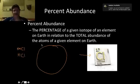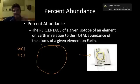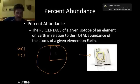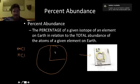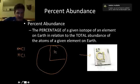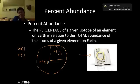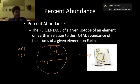Those two isotopes together encompass all the chlorine that exists on planet Earth, but each one is going to represent a certain percentage of the total chlorine on Earth. As it turns out, 25%, or a percent abundance of 25%, is chlorine-37. And roughly 75% is chlorine-35. So most of the chlorine we talk about is isotope 35, and there's also some that is chlorine-37.